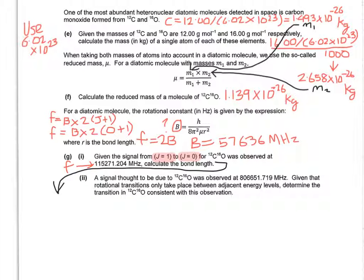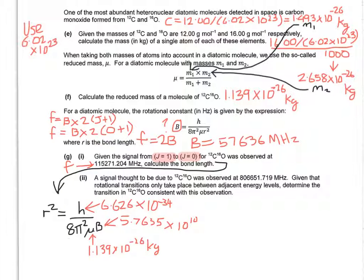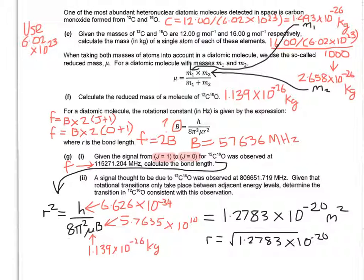Moving down to the bottom left-hand corner of the page, we can rearrange the formula to find R² as the subject. And we can put the values in now. Substituting all the numbers in and doing the calculation and taking care of the units by cancelling, you get 1.2783 × 10^-20. So R is obviously the square root of that, which is 1.13 × 10^-10 meters.